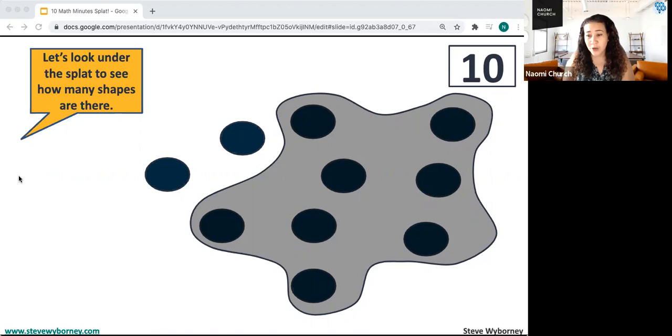So let's look under the splat to see how many there are. And so when students are sharing their thinking, you may get something like, well, there were 10 total, and I knew I could see the 2 on the outside, so I subtracted the 2. So there must be 8 underneath the splat because 10 minus 2 equals 8.